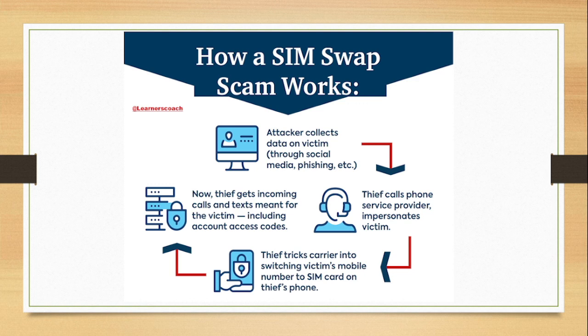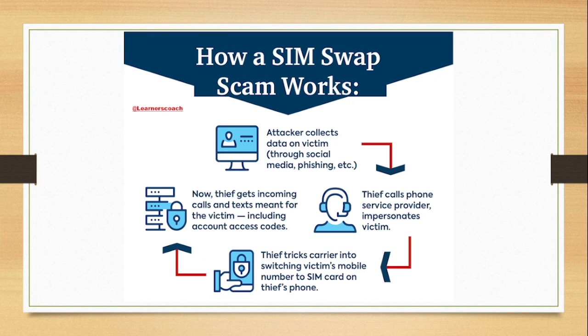After gathering enough information, they proceed to call your service provider and impersonate you, so that the service provider feels they are speaking with the real subscriber. They trick the service provider into giving them the confidential information they require. In the third stage, the hacker tricks the carrier into switching the victim's mobile number, and this is where the real swapping takes shape.